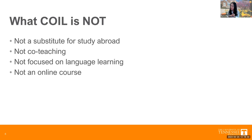Second, COIL is not co-teaching. Co-teaching is when faculty members come together, co-design a curriculum, and deliver the course together to both classes of students. That's not COIL, because although there might be some common lectures, faculty have full control over the concepts they are teaching their own students and control their own students' learning outcomes. The students are only graded by their own faculty. You don't have control over the other class, and the other faculty doesn't have control over yours. You are co-designing a project assignment, but you are not teaching the other class.